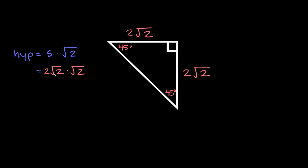The nice thing we can do here is combine the two radicals. The square root of 2 times the square root of 2 is equal to simply 2. And then we're still multiplying by this 2 out here, so we basically get 2 times 2, which equals 4. So the hypotenuse is equal to 4.